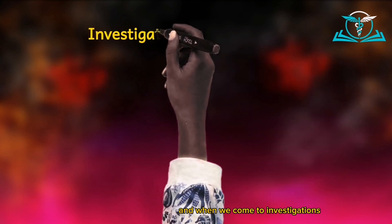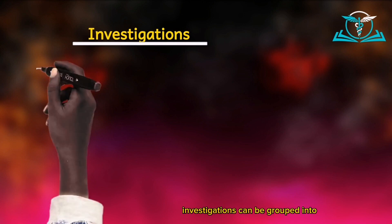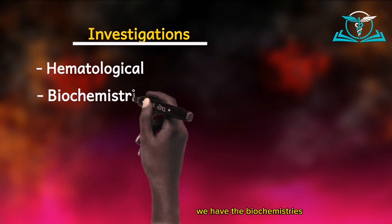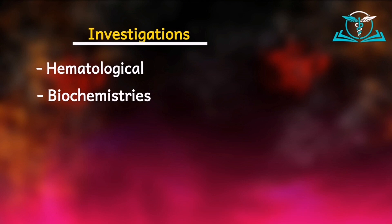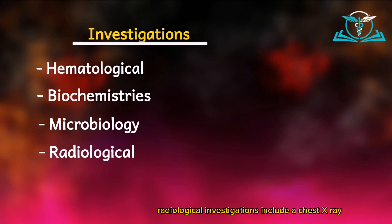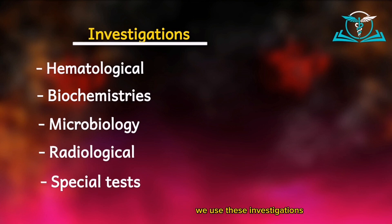When it comes to investigations, depending on which ones help diagnose and manage the patients, we have different categories. Investigations can be grouped into hematological investigations, like the full blood count; biochemical investigations, such as liver function tests; microbiological investigations, such as blood culture and sensitivity; and radiological investigations, including a chest X-ray, abdominal radiograph, or CT scan. Then we have special tests like the ECG. We use these investigations to diagnose suspected conditions.